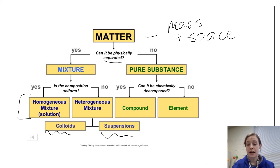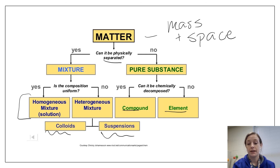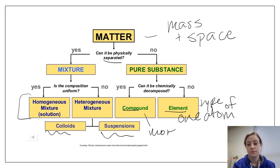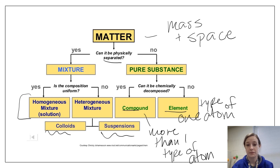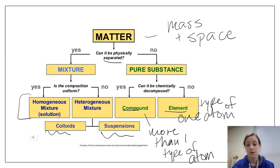Pure substances cannot be physically separated — if we want to break down a pure substance, we have to do it chemically. Pure substances have only two types: compounds and elements. Elements are made up of only one type of atom, while compounds have more than one type of atom. This organizer is a great way to organize all the matter-related vocabulary and connect the terms with one another.